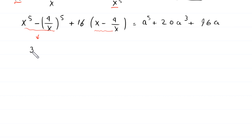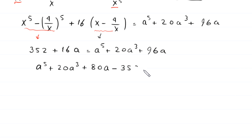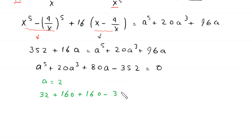Rearranging gives a⁵ + 20a³ + 96a − 16a − 352 = 0, which simplifies to a⁵ + 20a³ + 80a − 352 = 0. Now we check if a equals 2 is a solution: 32 + 20·8 + 80·2 − 352 = 32 + 160 + 160 − 352 = 0. Yes, so a equals 2 is a solution, meaning (a − 2) is a factor.